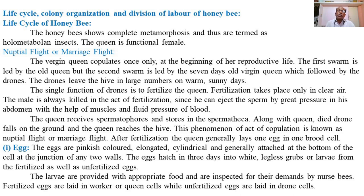The drones leave the hive in large numbers on warm sunny days. During the second swarm or nuptial flight, the virgin queen first leaves the colony and then the drones follow her. The drones leave the colony in large numbers at about 11 in the morning on a warm sunny day, flying behind the queen so as to catch her.